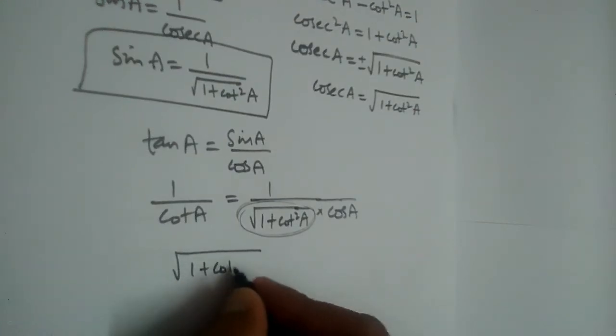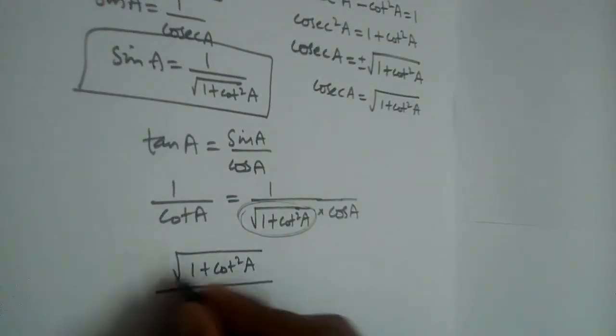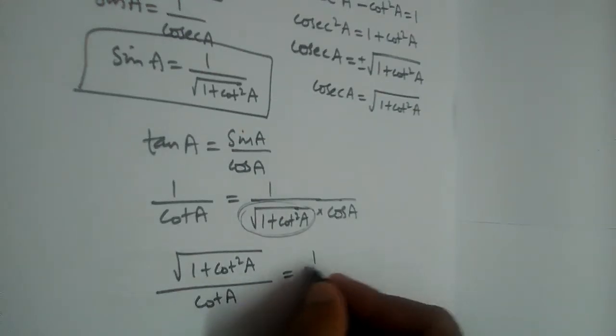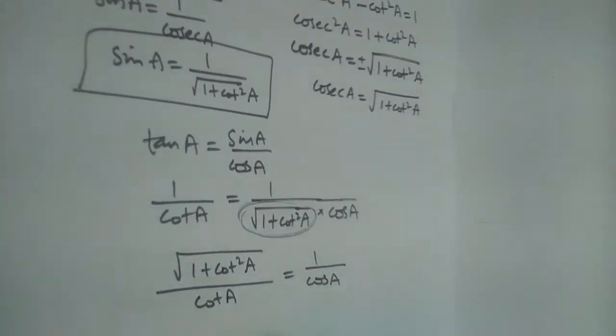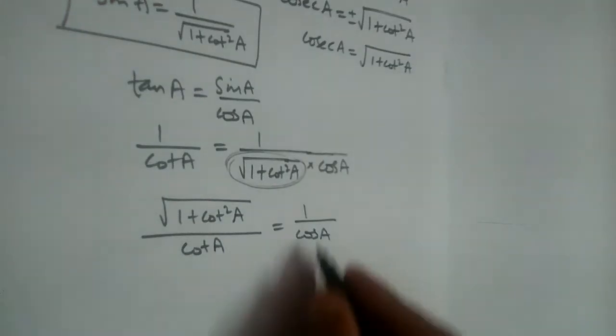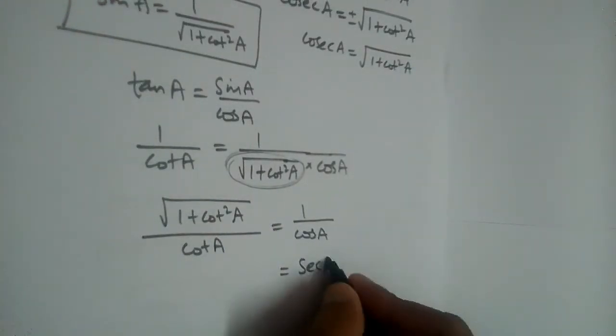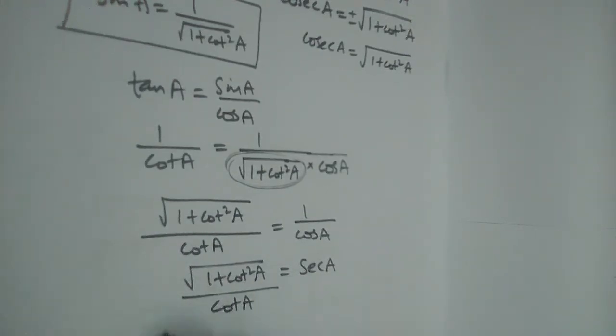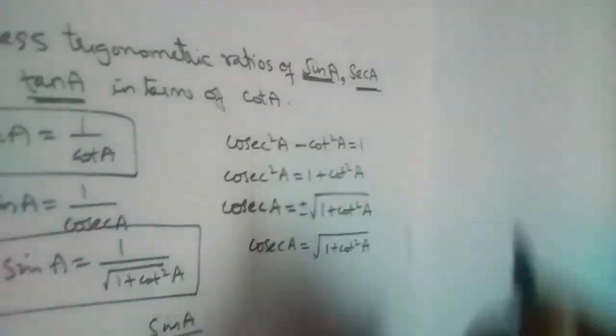But what is 1 by cos A? It equals secant. So secant value is root 1 plus cot square A divided by cot A in terms of cot. So we found secant also in terms of cot.